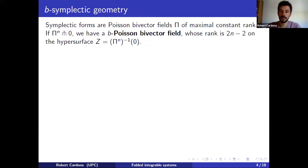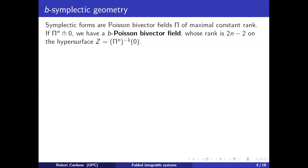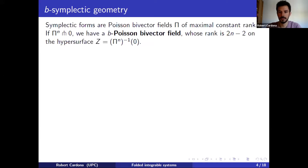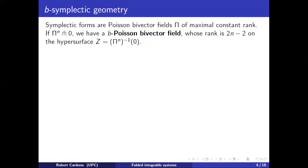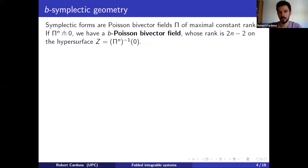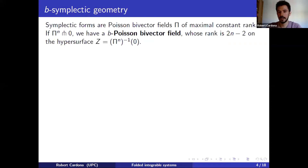An example which is probably the best possible singularity is just asking that the top wedge product of your bivector field is transverse to the zero section. In this case, we speak of a b-Poisson bivector field or a b-Poisson structure. It follows from this transversality that there is a hypersurface Z — the zero locus or critical locus — where this bivector field to the n-th power vanishes, and the rank of the Poisson bivector field drops to 2n−2.